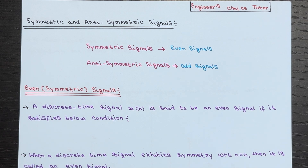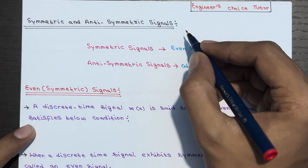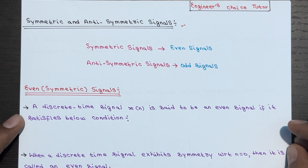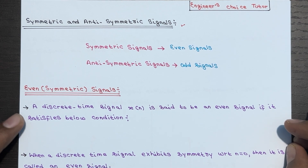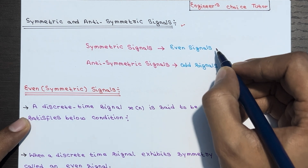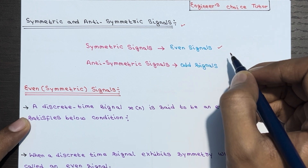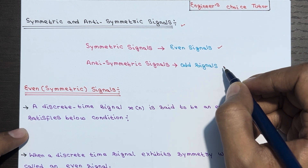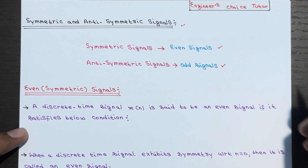Hello everyone. In this lecture we will be discussing symmetric and anti-symmetric signals. Symmetric signals are also known as even signals, while anti-symmetric signals are also known as odd signals. Let's start with even signals.